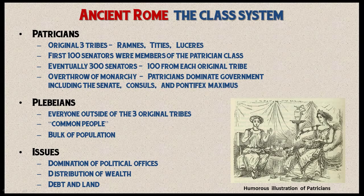The plebeians consisted of everyone outside of those original three founding tribes — they could not trace their roots to those tribes. Plebeian stands for common people, and they outnumbered the patricians, constituting the bulk of the Roman population. The main issues were the patrician domination of all political offices, giving patricians a monopoly on the Roman government, which in turn allowed them to become extremely wealthy.